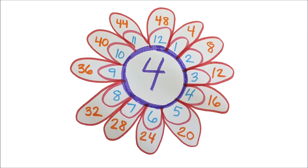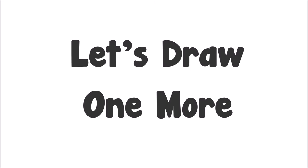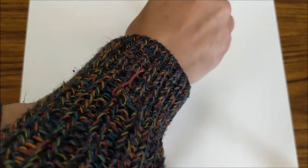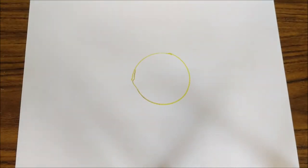Now we can do this with any of our multiplication facts. So the first step is to trace something that's circular so you have a nice center of your flower.